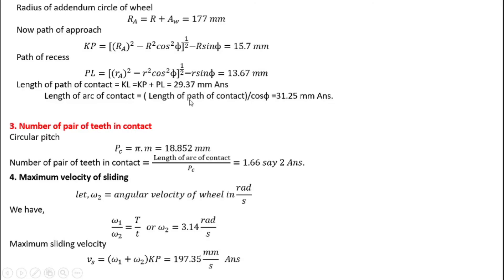The length of arc of contact equals the length of path of contact divided by cos φ. With all values known, we can calculate the length of arc of contact. For the number of pairs of teeth in contact, the formula is the length of arc of contact divided by the circular pitch PC. PC equals πm, so we can calculate PC and divide to get the number of pairs of teeth in contact, which comes to 1.6.